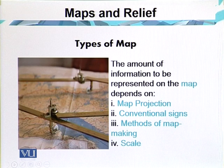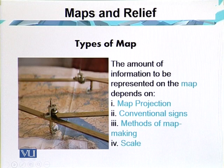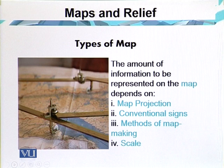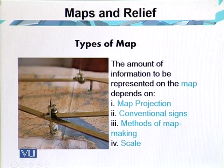The amount of information represented on the map depends on map projection, conventional signs, methods of map making, and scale. These are the basic components of map making. Without map projection, we cannot draw a map on paper. Every projection type has its own application based on location. Cylindrical projection is used for areas closer to the equatorial and tropical regions, conical projection is used for middle latitudes, and zenithal projection is used for polar areas. With the help of longitudes and latitudes, areas can be properly managed through map projections.